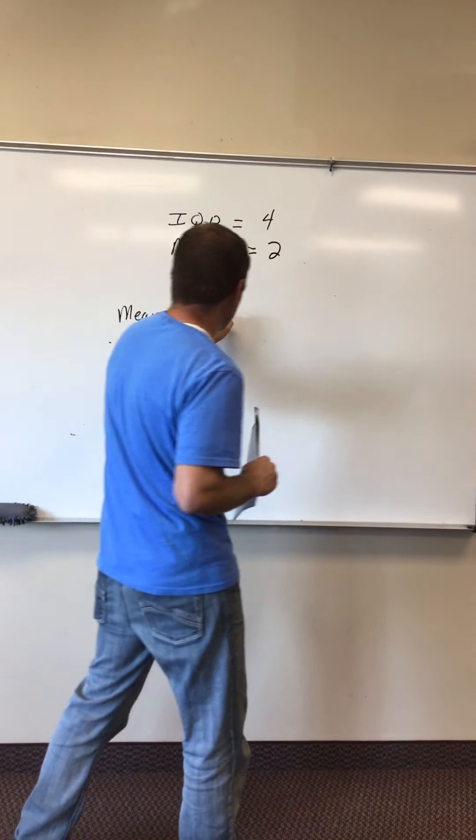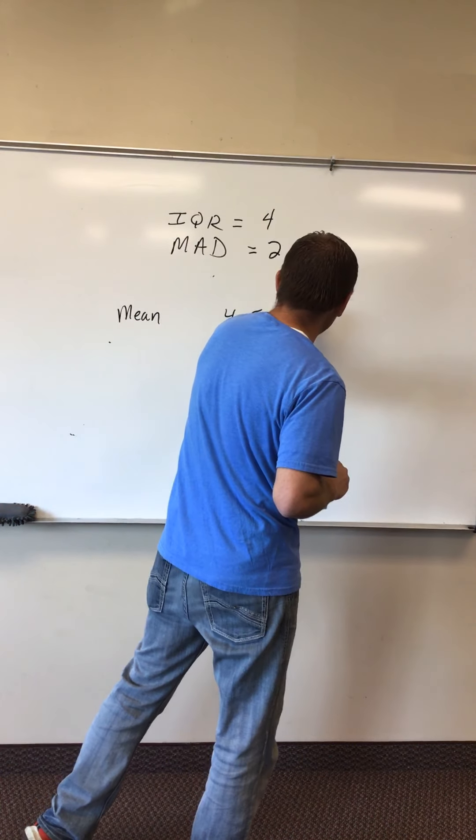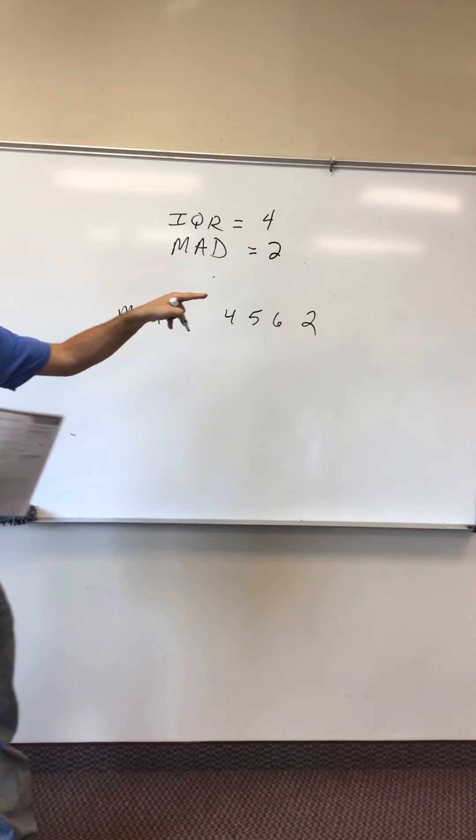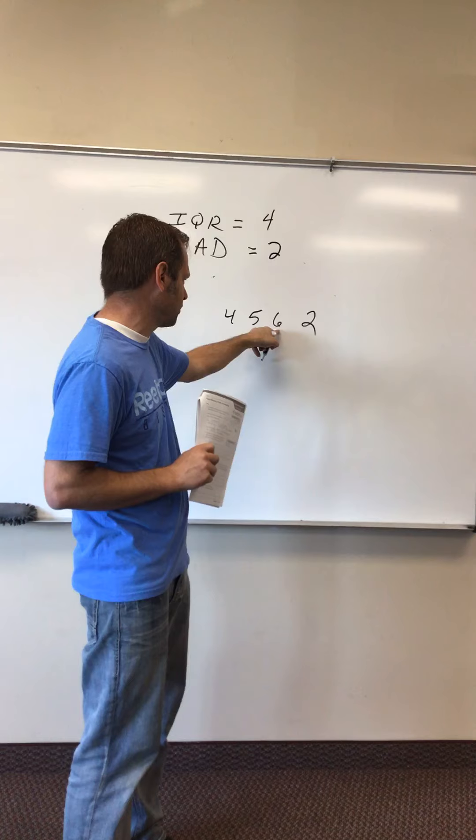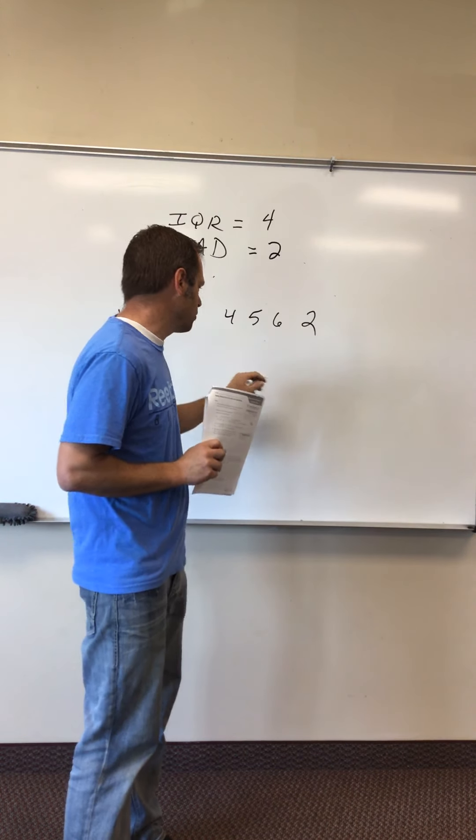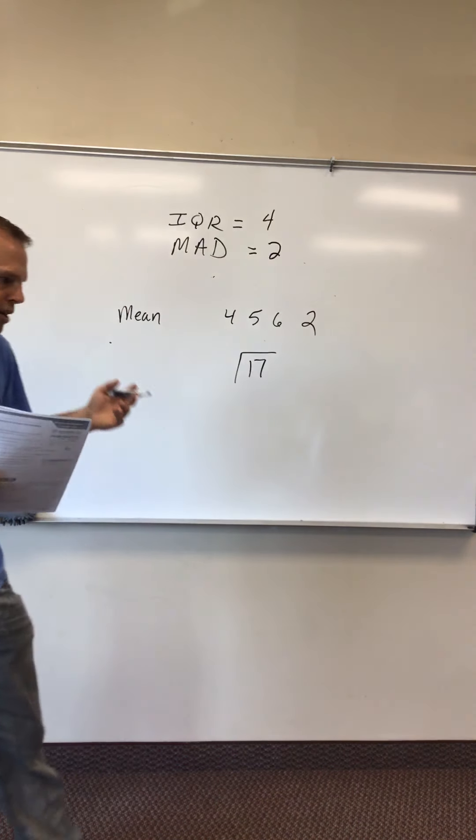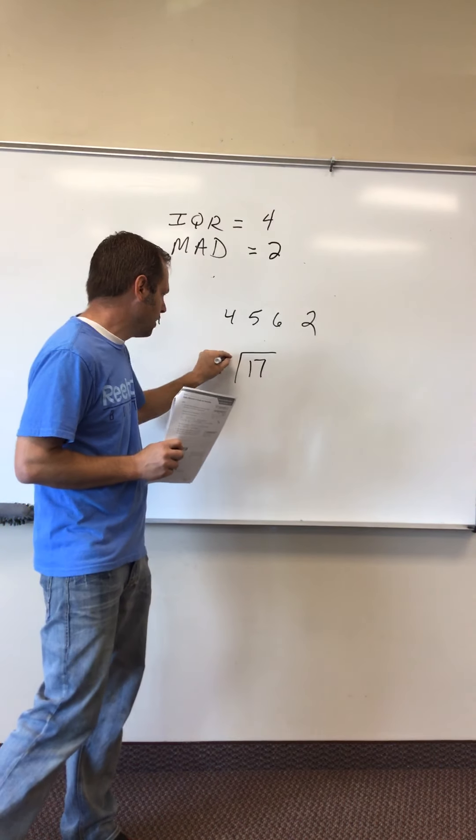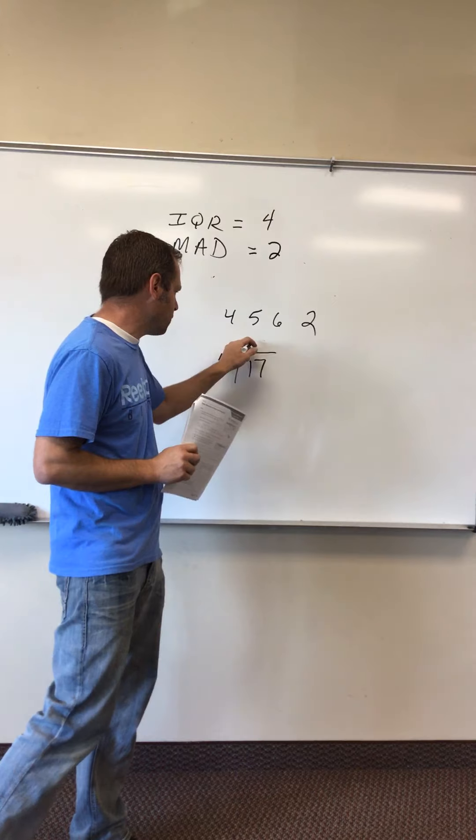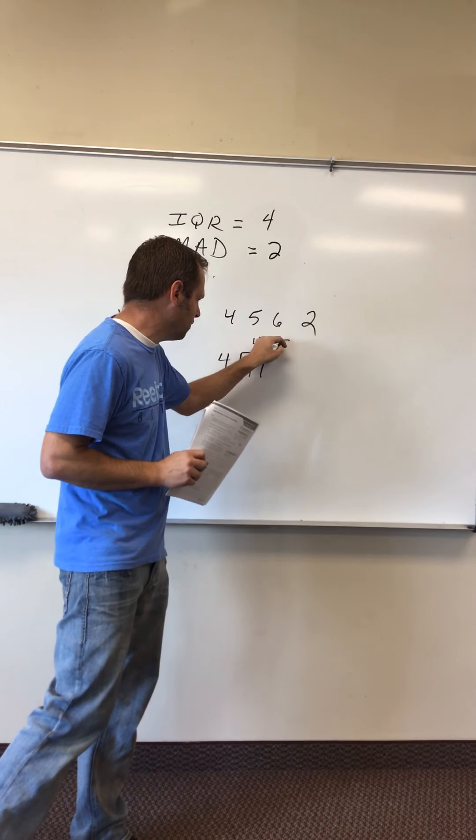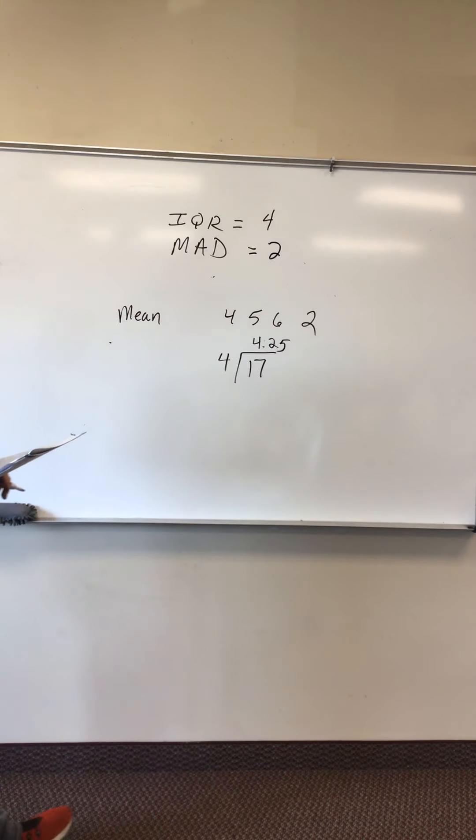So if I have 4, 5, 6, and 2, you're gonna add your numbers together: 4 plus 5 is 9, plus 6 is 15, two more makes 17. Then you're gonna divide by the amount of data points you have. I have four in this case, so 17 divided by 4 is going to be 4.25. That's my mean.